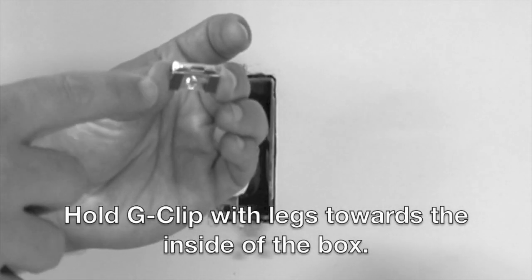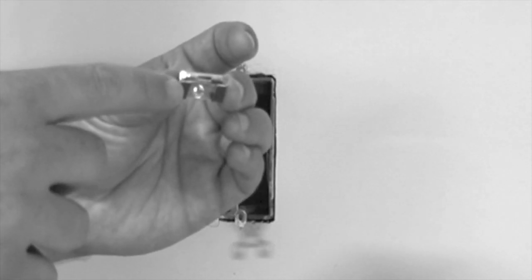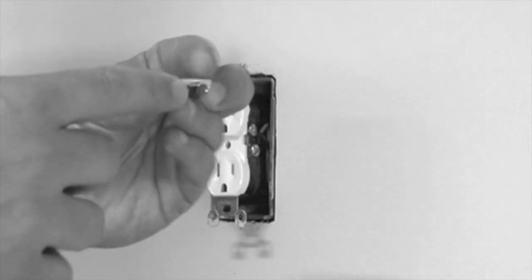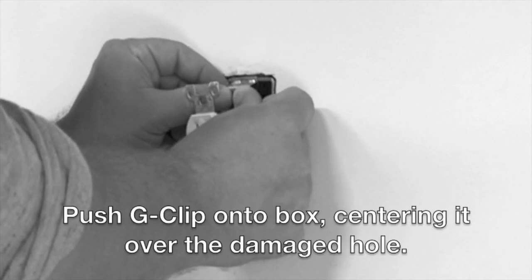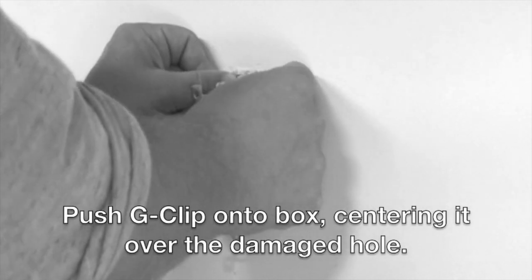Now, hold the G-Clip with the legs facing the inside of the box. Center the G-Clip over the damaged threaded hole and push the G-Clip onto the box.